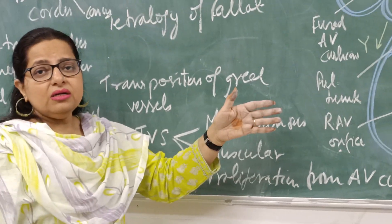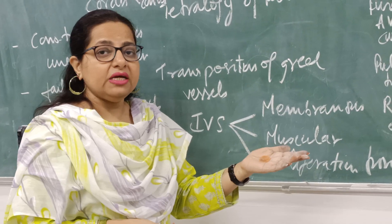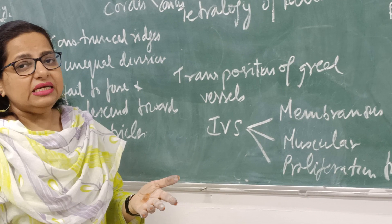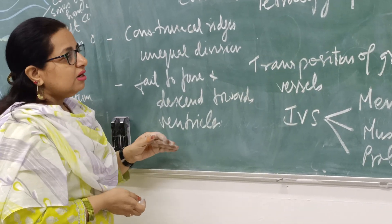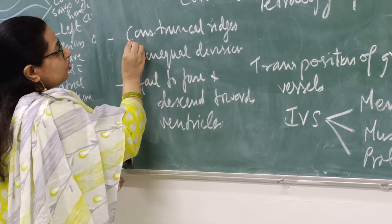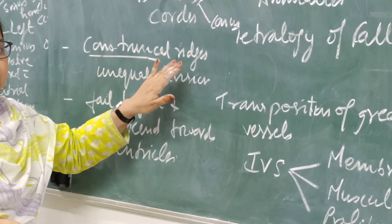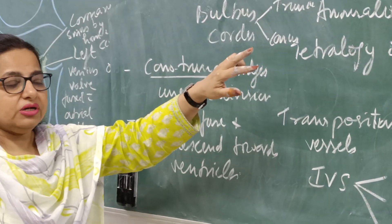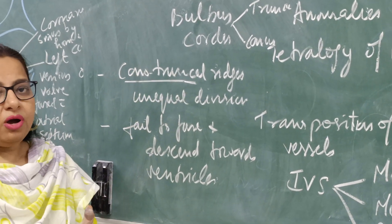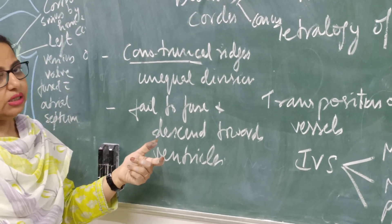This is how the normal anatomy is, but if deviation from the normal takes place it will lead to anomalous development of the interventricular septum. There are certain conditions in which the interventricular septum is not properly formed. Basically, the conotruncal ridges — that is the right and left bulbar ridges along with the spiral septum — are not properly developing, leading to the anomalous development of the interventricular septum.